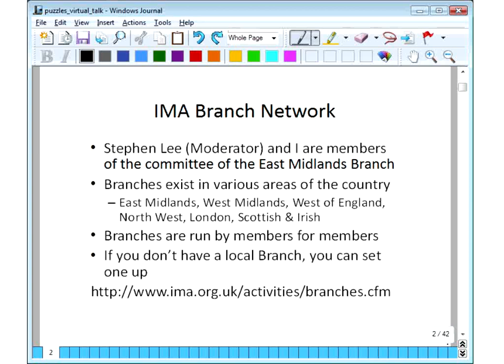The IMA, for those of you who don't know it, the IMA has a branch network. Stephen and I are both on the committee of the East Midlands branch. Branches exist in various areas of the country, although not everywhere. Currently, the IMA website lists East Midlands, West Midlands, West of England, North West, London, Scottish, and Irish branches. Although this varies from time to time, branches are run by members for members. They usually do talks. They sometimes do school stuff, activities. They sometimes do social excursions, things like that. If there isn't a branch in your area, you can set one up. So there's a web address there. But if you go to the IMA website and then click on activities, you can find branches fairly easily.